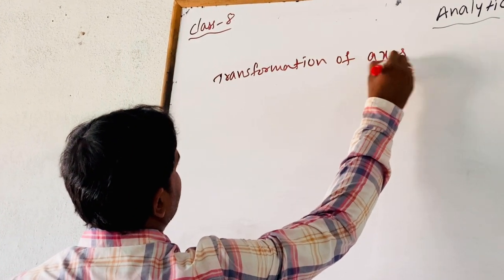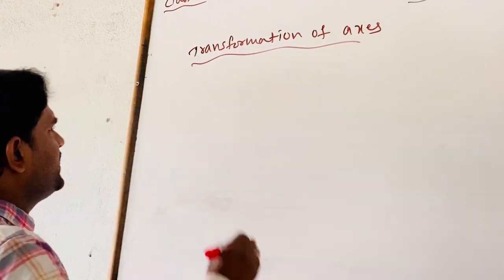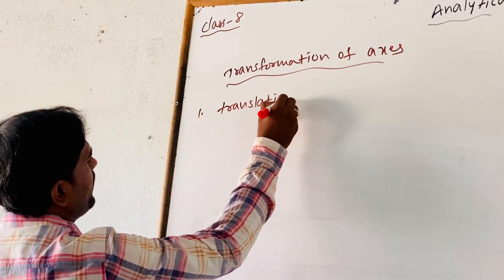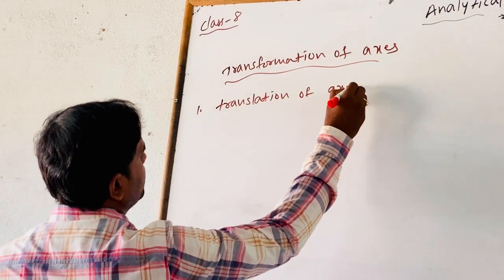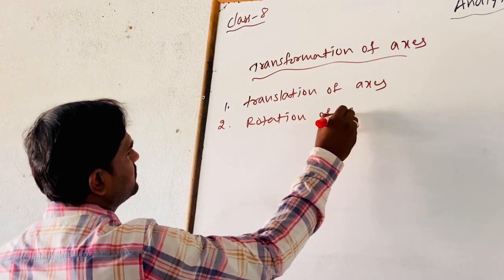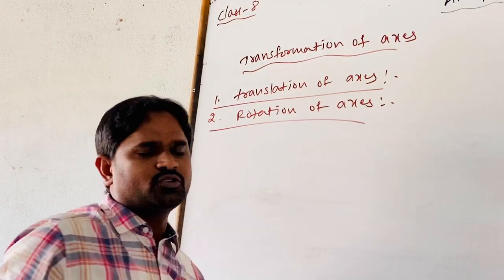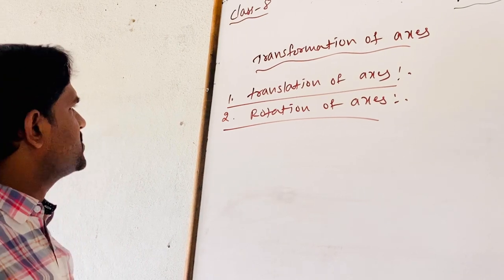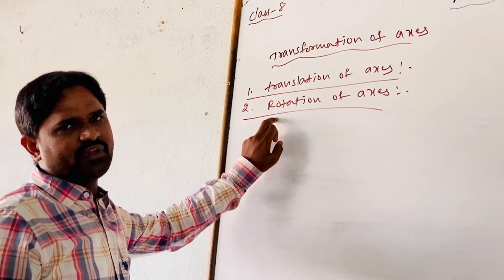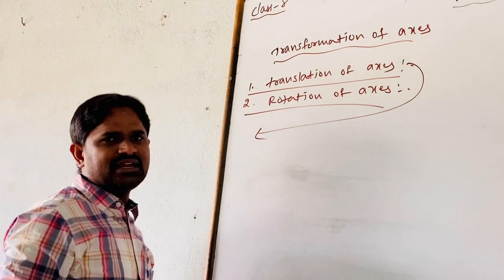Transformation of axis means there are two types of transformations. The first is translation of axis and the second one is rotation of axis. In your plane, with respect to the two coordinate axes, we are transforming with two types of transformations: translation of axis and rotation of axis. Now, we are going to discuss about the translation of axis.